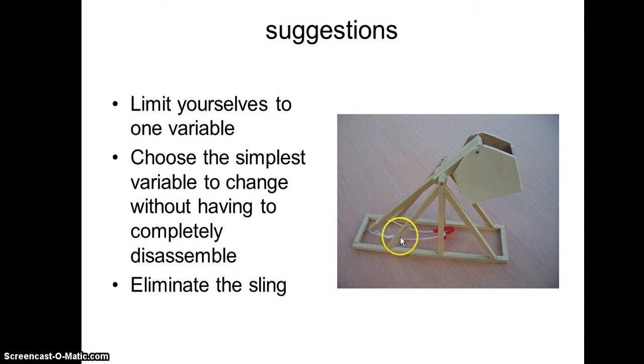Another suggestion I'm going to have is just eliminate the sling. Getting the sling to release correctly so that it's not throwing into the ground or throwing straight up in the air can be tricky. And you don't have a lot of time to troubleshoot and to build your trebuchet. So I would build one without the sling.